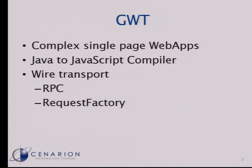What is GWT? GWT is a framework to develop complex single-page web applications. It consists of a Java to JavaScript compiler, so the main advantage is that you only need one language. You compile it to JavaScript, you can use your IDE, you can use your unit test environment to also test your client-side code in the same style as you test your server-side code.